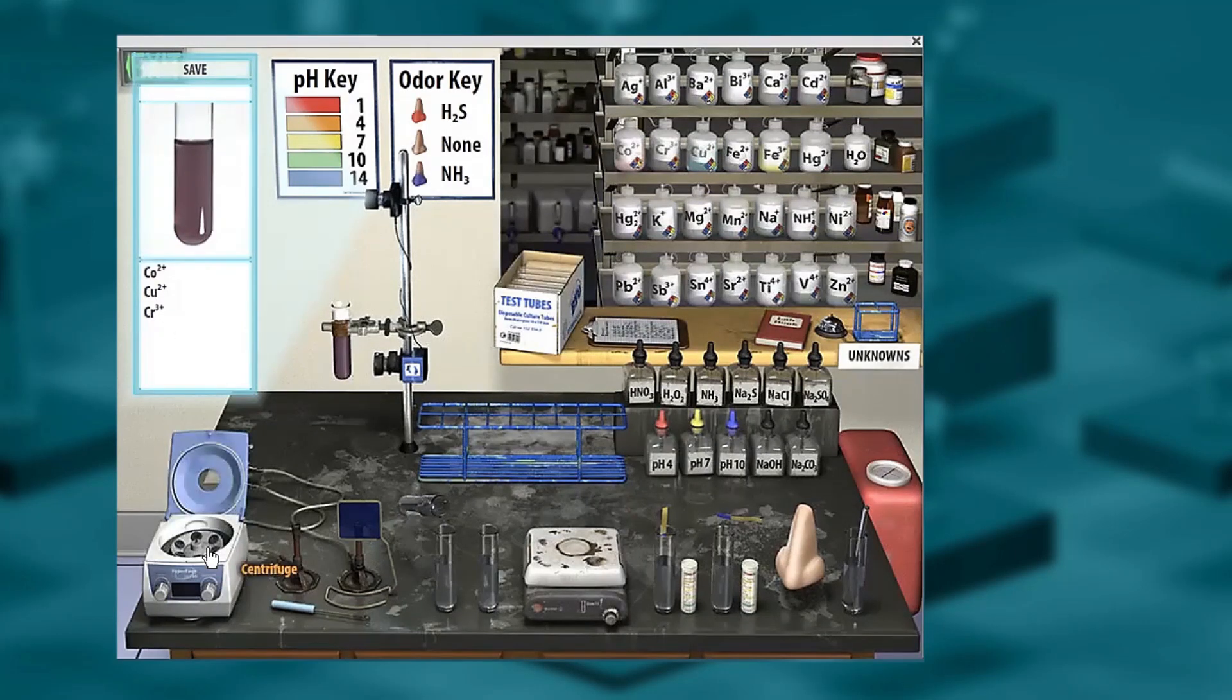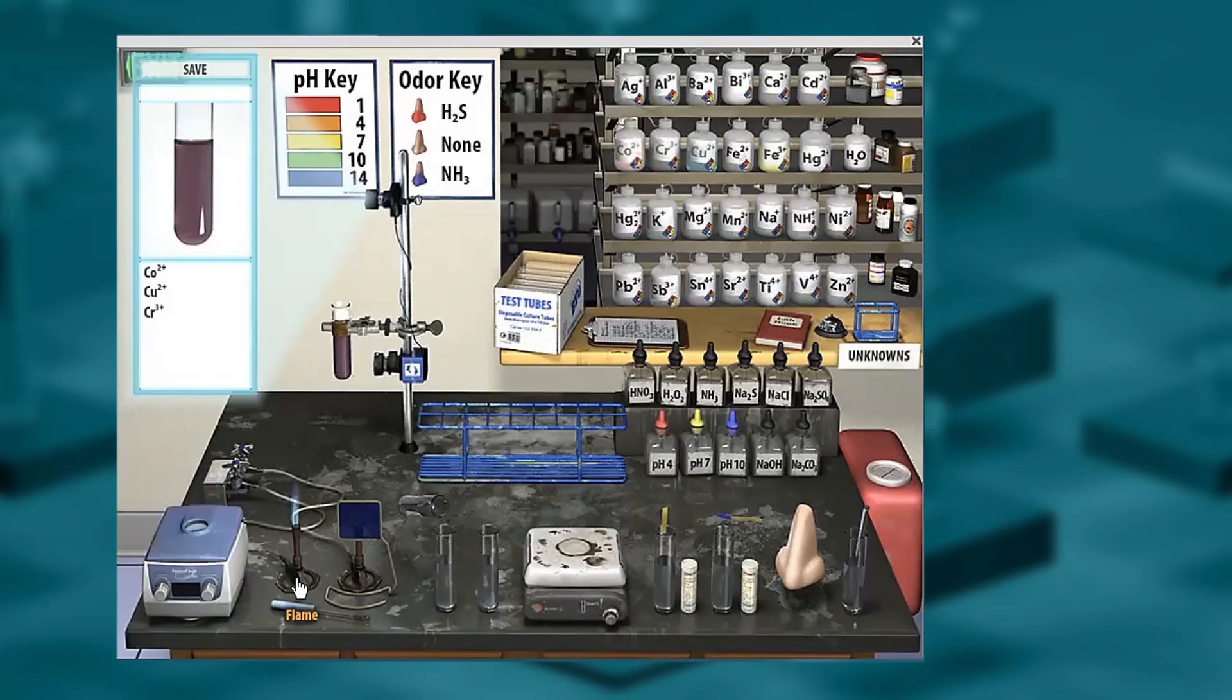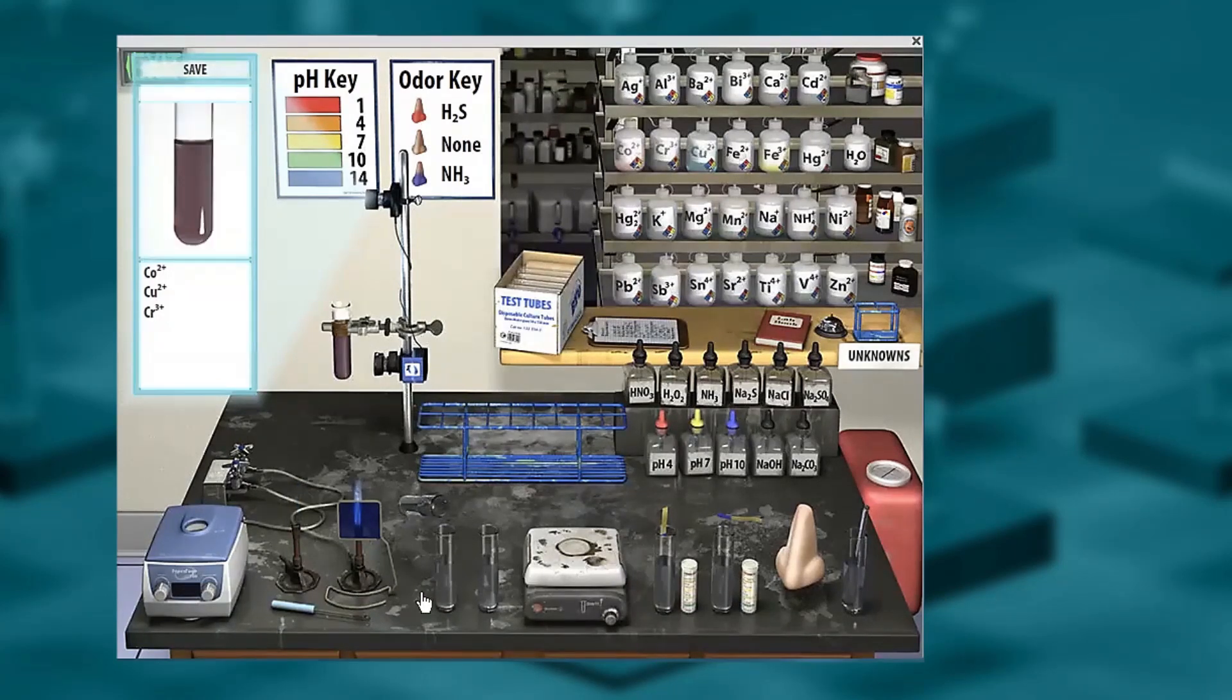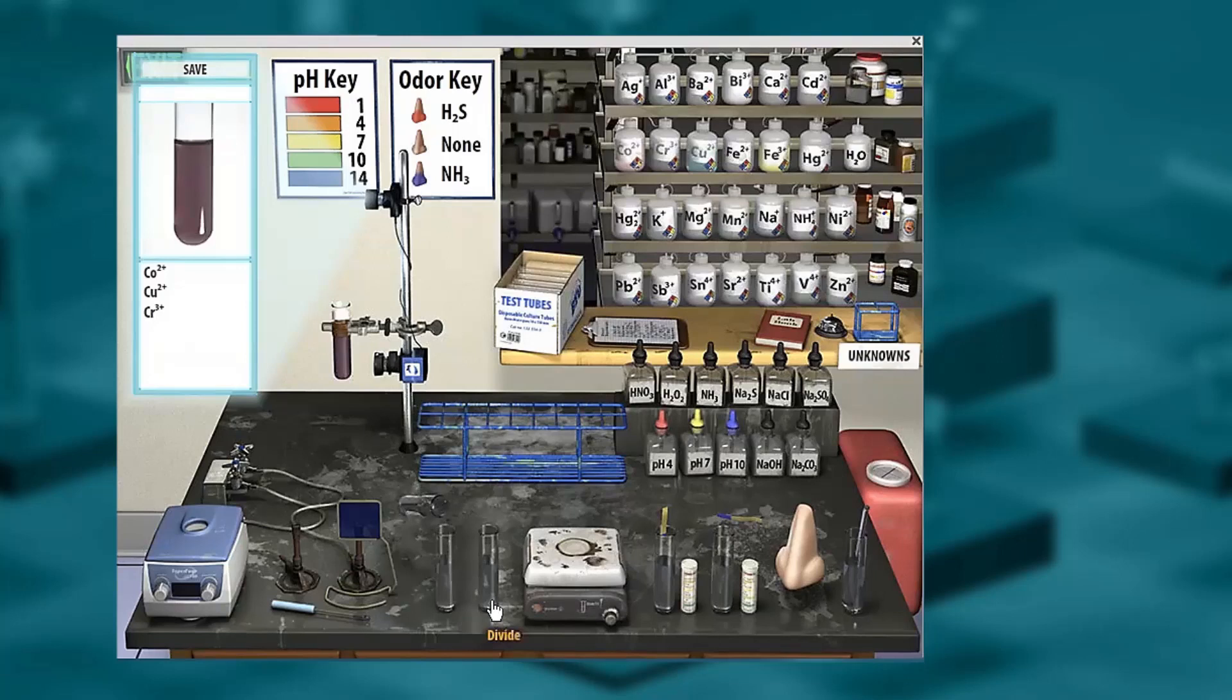Then I have these lab manipulations. I can centrifuge it, do a flame test—we show a real flame test here, or a flame test with a cobalt filter. I can decant it, divide, heat it up,